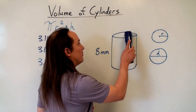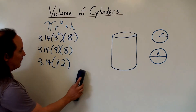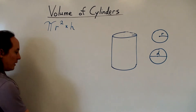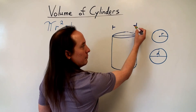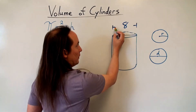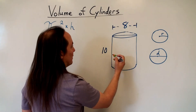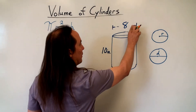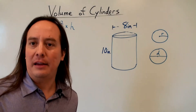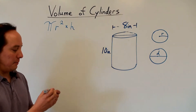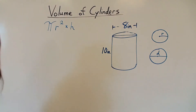Let's change it up a little bit using the same picture. This time, I'll say the diameter across the top is 8, and the height is 10 inches. Same question: what's the volume of this cylinder? Go ahead and stop the video and give me the answer — try to solve it for yourself before I do. Remember to use the pi symbol button or function on your calculator.